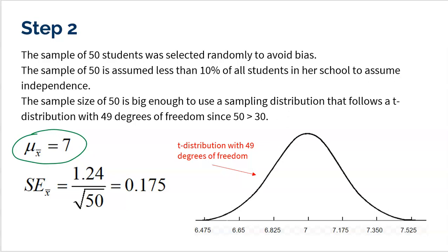The standard error is the standard deviation of my sample, 1.24, divided by the square root of the sample size 50, giving 0.175. So I put seven in the middle and mark one, two, three standard errors up and down.